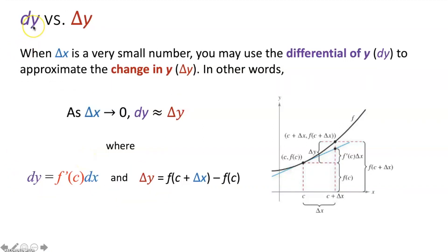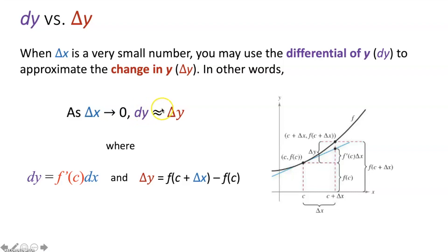Let's look more closely at the difference between dy (the differential of y) and delta y (the change in y). When delta x is a very small number, you may use dy to approximate delta y. In other words, as delta x approaches 0, dy is approximately equal to delta y. In this figure we'll see the difference between dy and delta y.